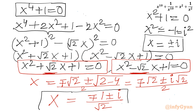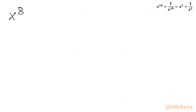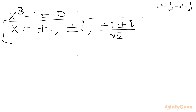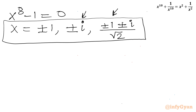So overall, all eight solutions have been calculated — 2 are real. For x^8 - 1 = 0: x = ±1, ±i, (±1 ± i)/√2. You can see 8 solutions for the degree 8 equation.